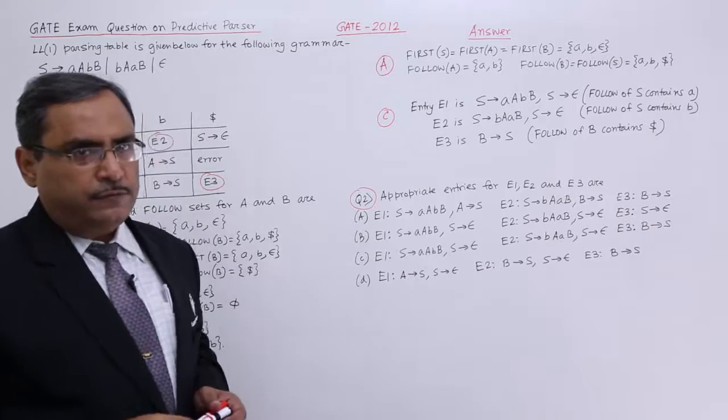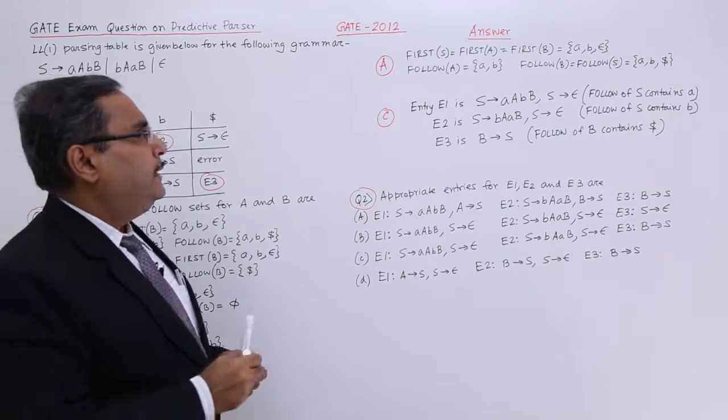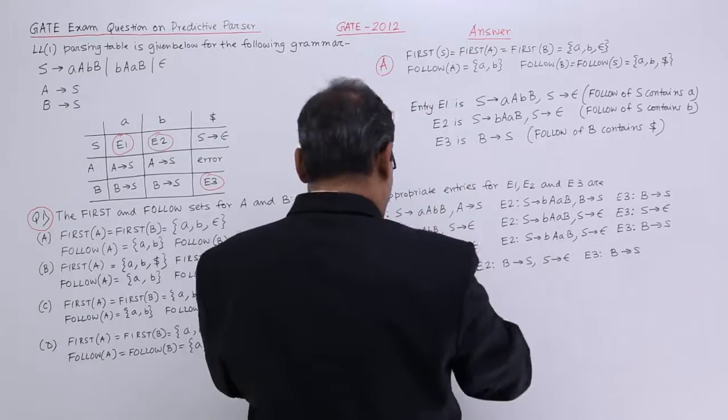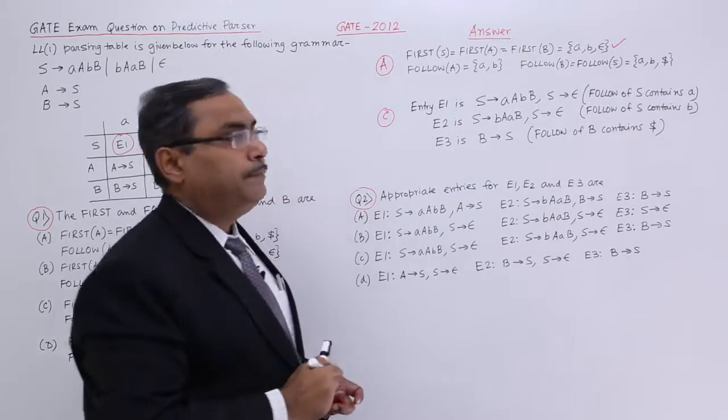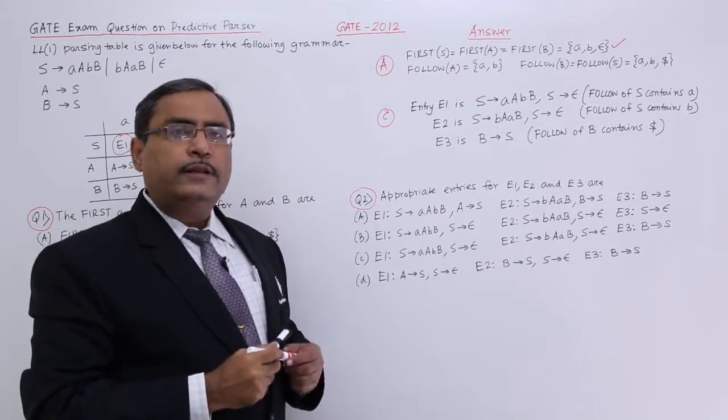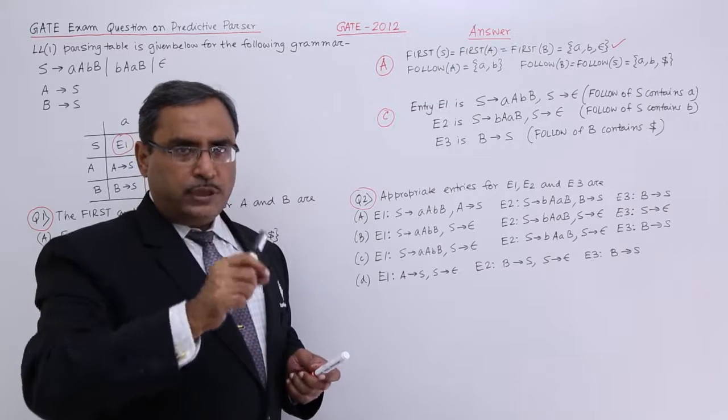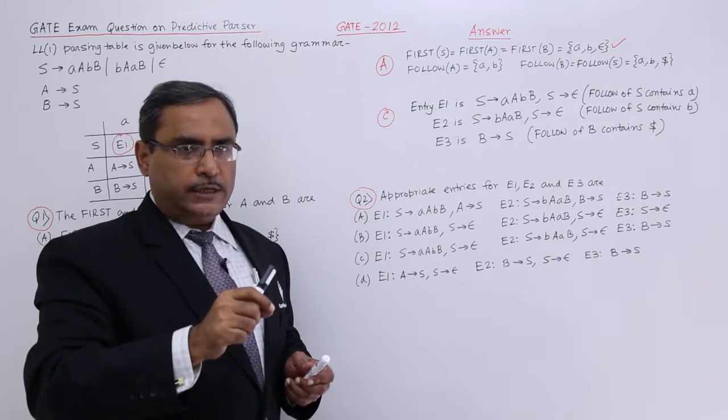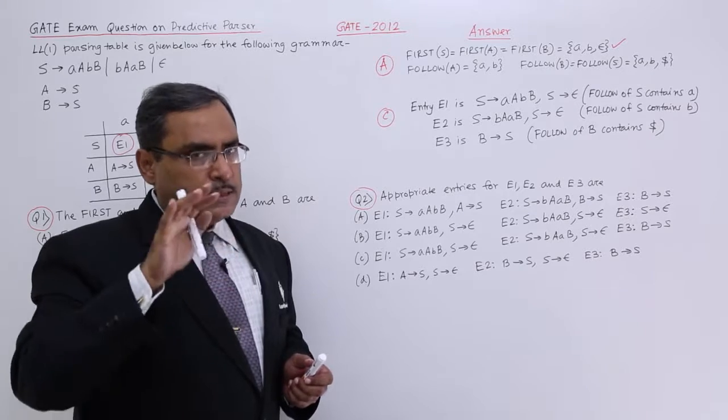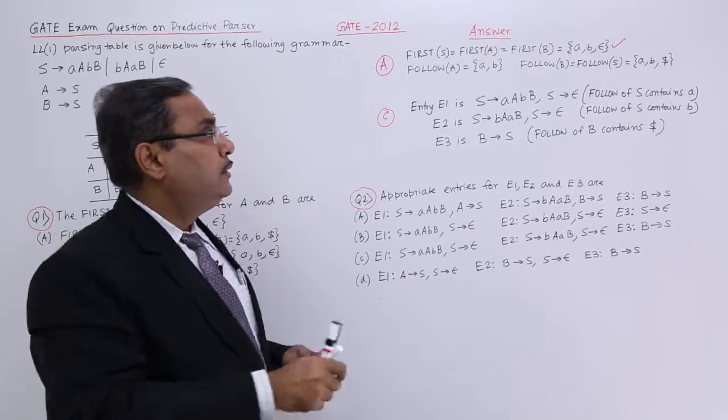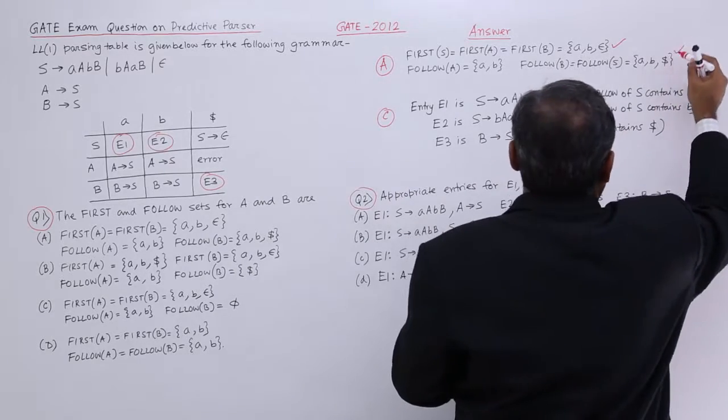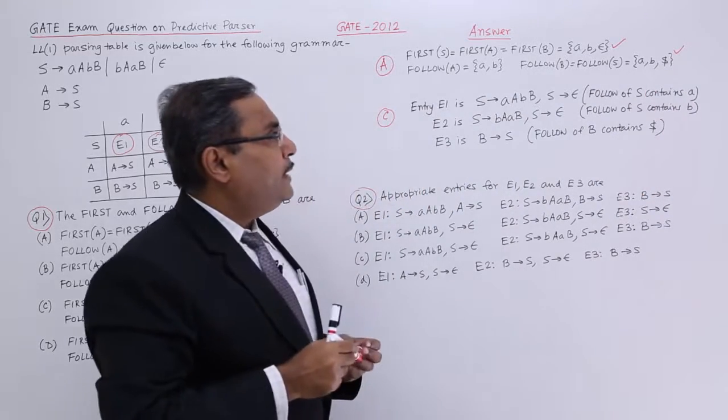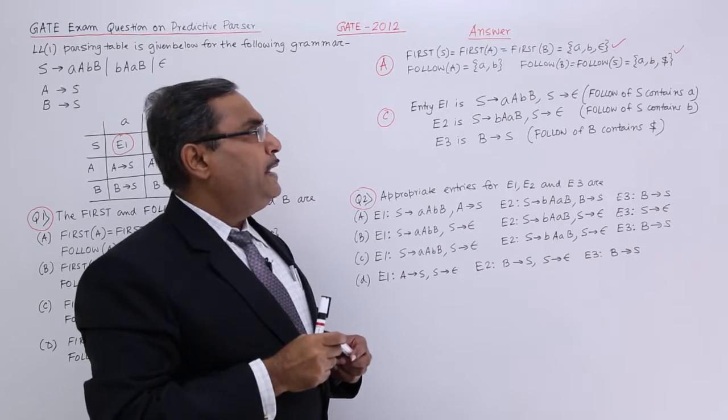If you calculate the first for A, B, then in that case I am getting this one as A, B and epsilon. Now, go on calculating the follow. The follow rules are given. Three rules are there and how to calculate each and everything we have discussed in a separate video for follow calculation. Follow of A will be A, B and follow of B will be A, B and dollar.